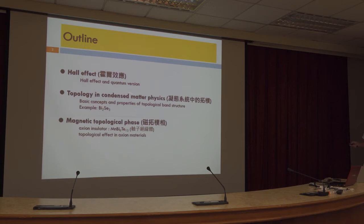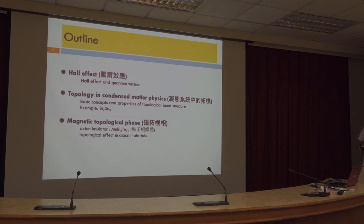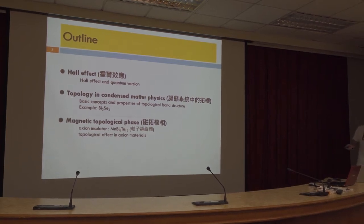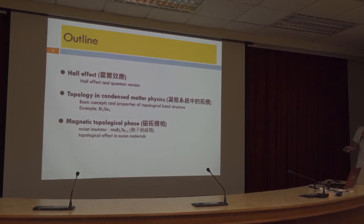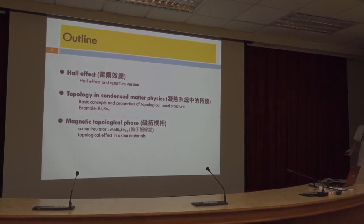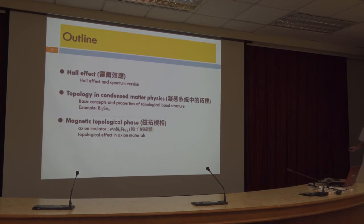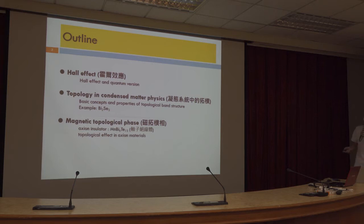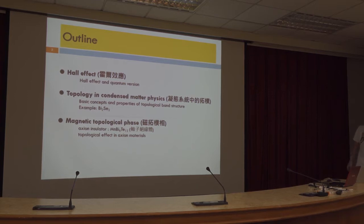Next, I will briefly introduce the basic concept of topology in a condensed matter system. And I will give an example of a typical topological material — bismuth selenide. In the final part, we will discuss the magnetic effects. I will introduce our recent prediction and some experimental results on the first intrinsic ferromagnetic axion insulator, MnBi2Te4·1A3.